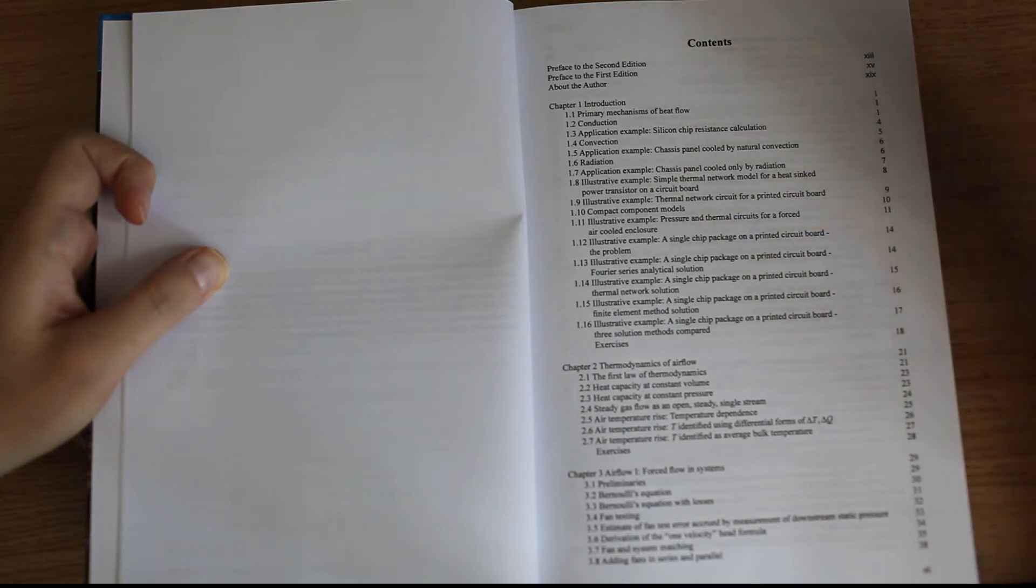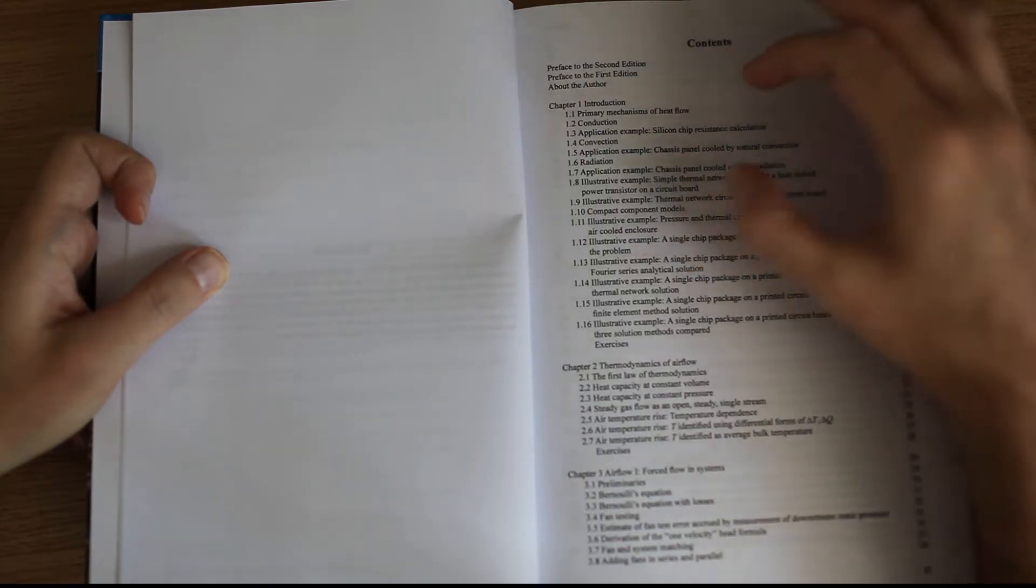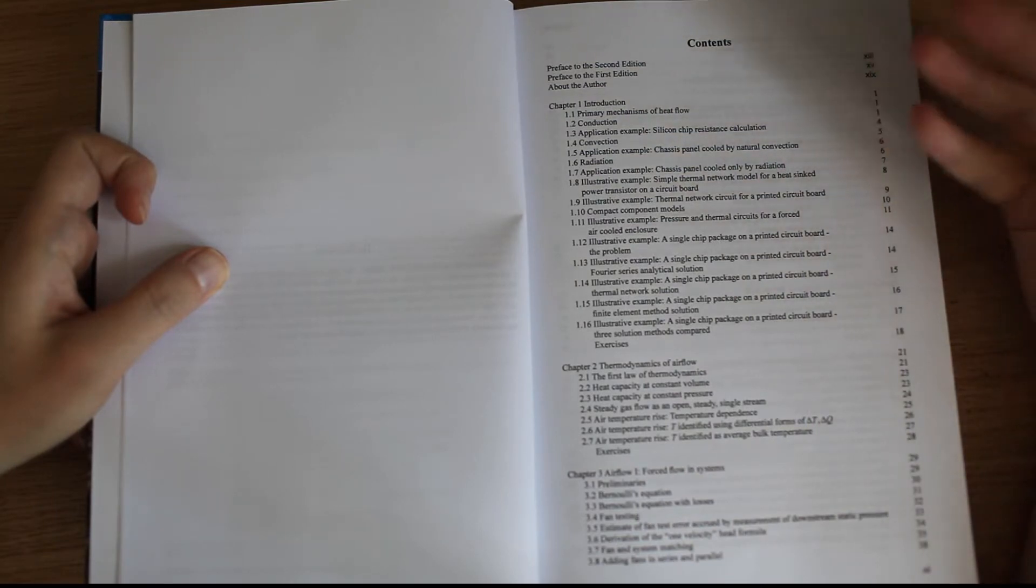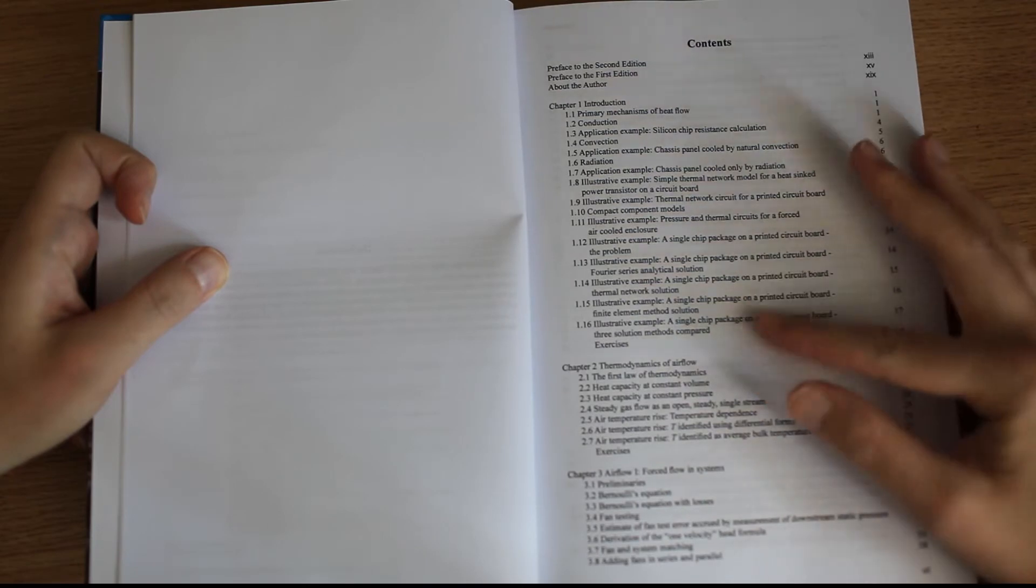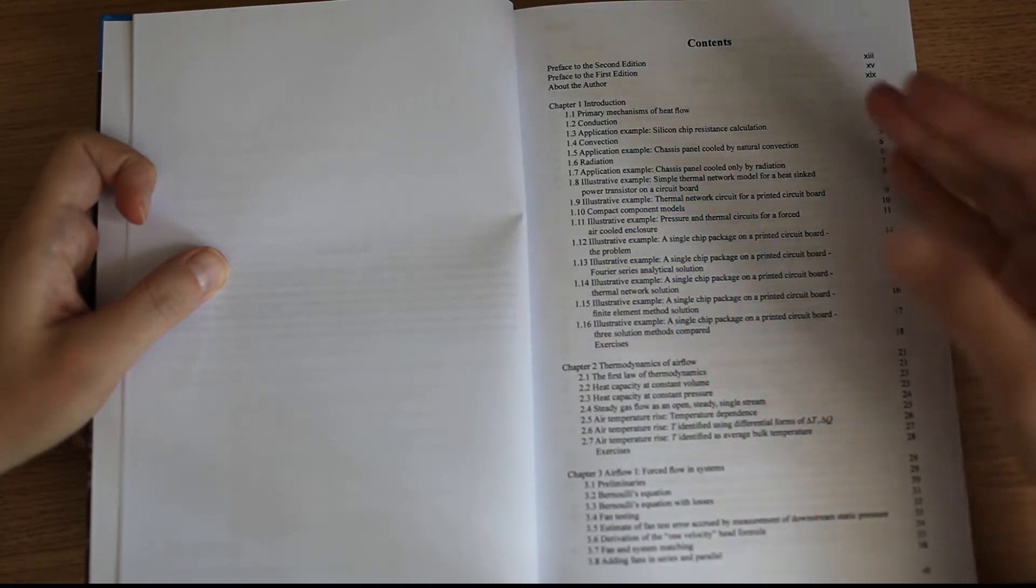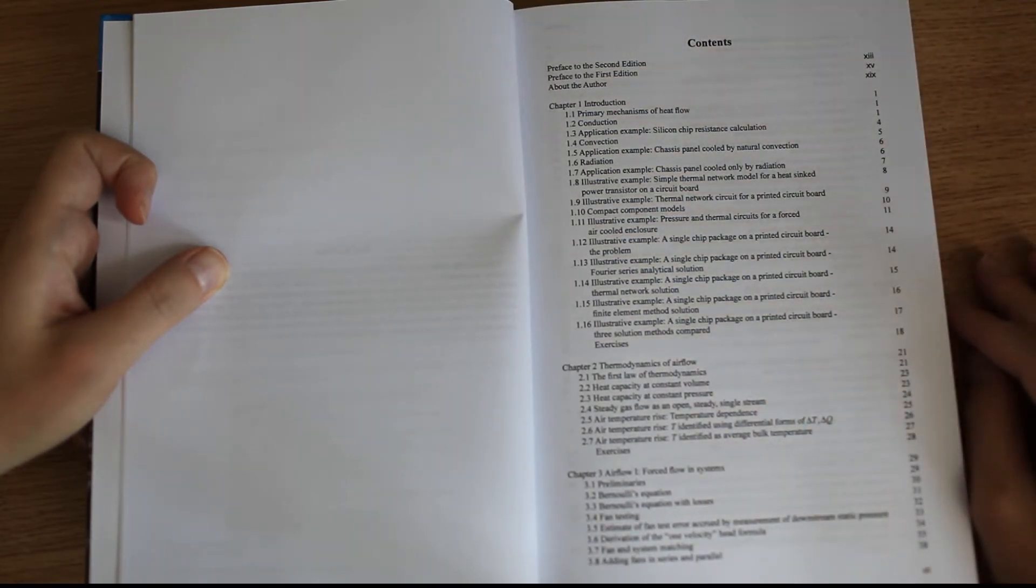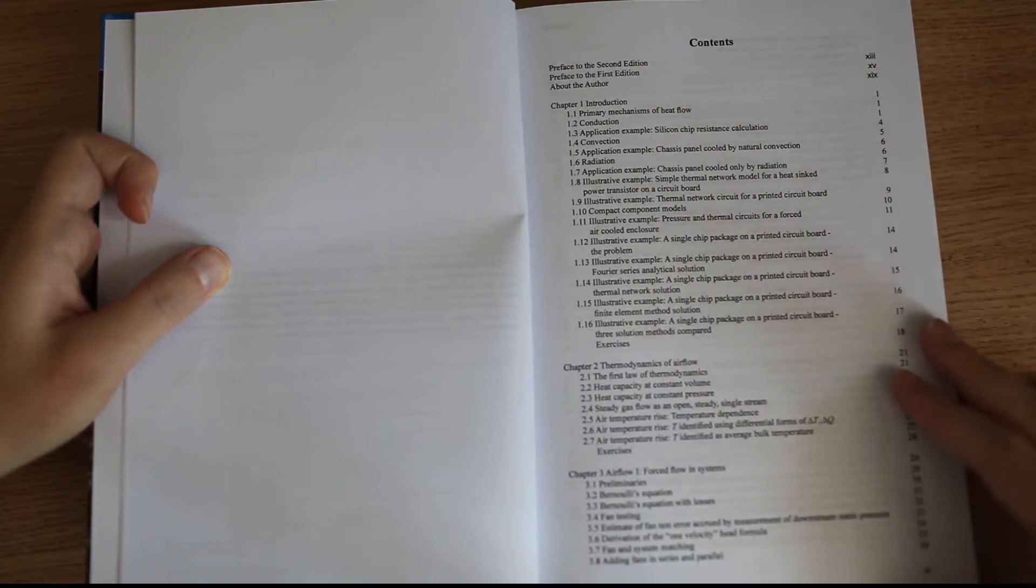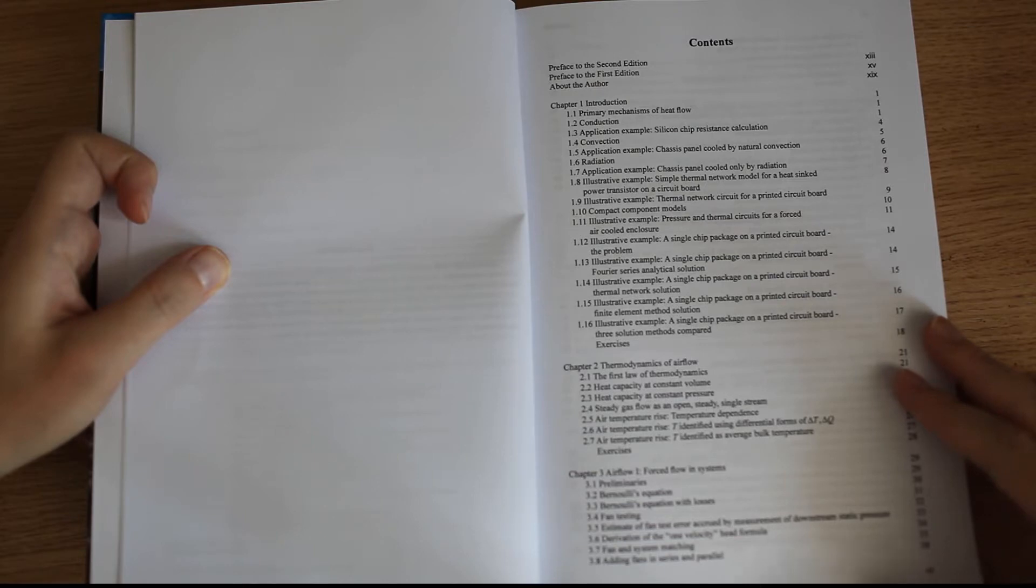You see that there's a big introduction about the mechanisms of heat flow: conduction, convection, radiation. So it tells you the basic equations, and those are really the most basic things you have to understand first. And then it goes with a bunch of examples to basically apply what's inside this chapter. And I liked this chapter because it's really practical.